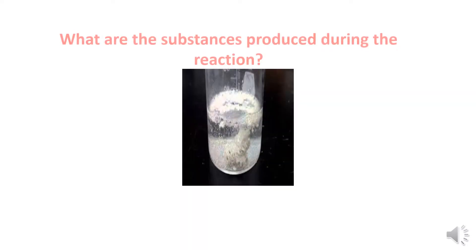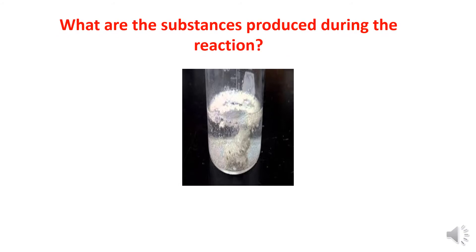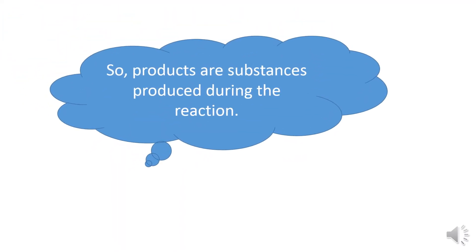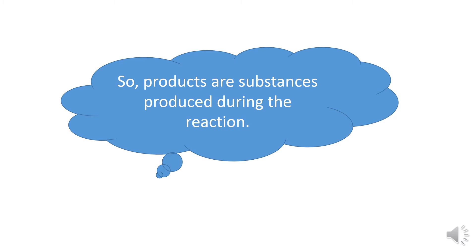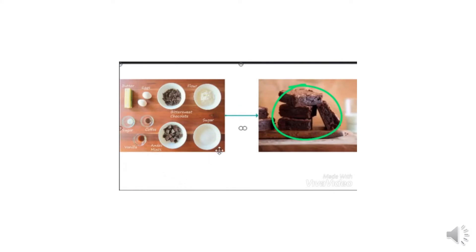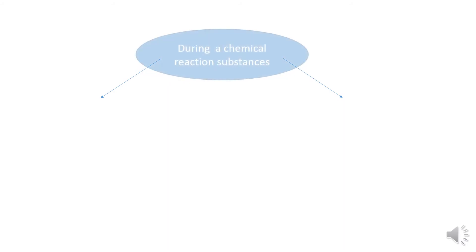In the reaction between chalk and vinegar, what are the substances produced during the reaction? They are the released gas, water, and salt. These substances are called products. Products are substances produced during the reaction. Let's look at another example: these ingredients are transformed into delicious cookies. So the reactants are the ingredients, and the products are the cookies.